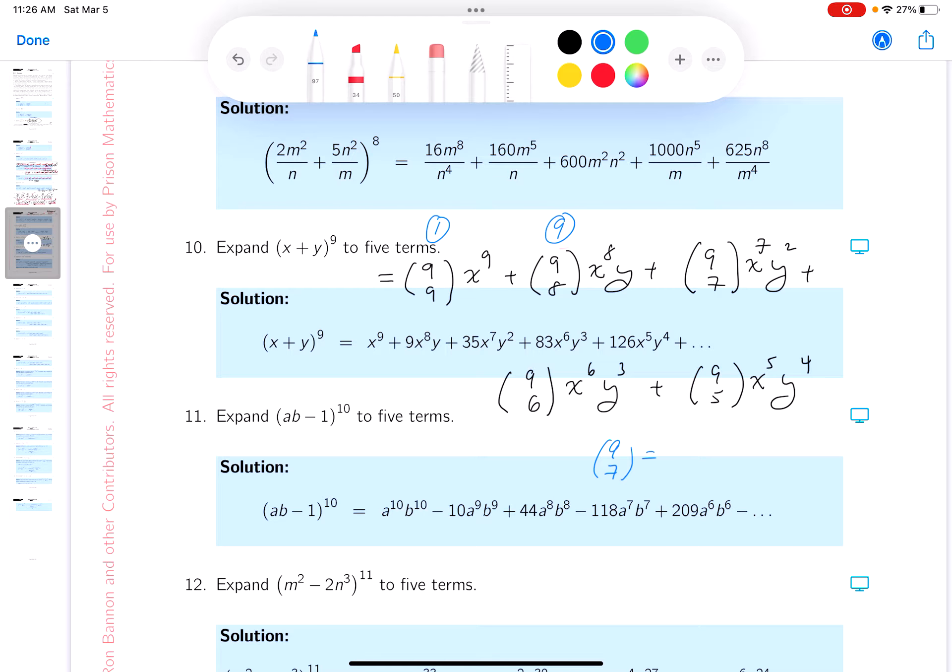And what does that mean? 9 factorial, which is 9 times 8 times 7 factorial. The bottom is 7 factorial times 2 factorial, which is 2. Well, that cancels off. You're going to get 36. So I'm going to say this number over here is 36.